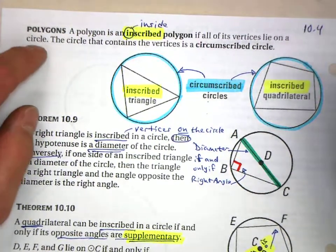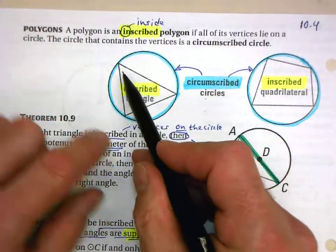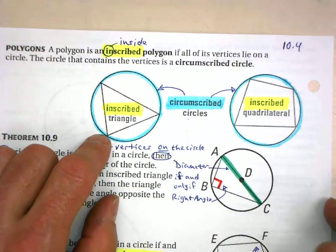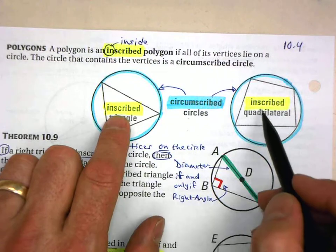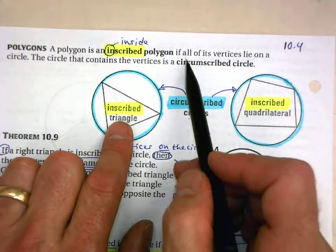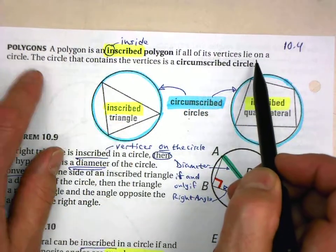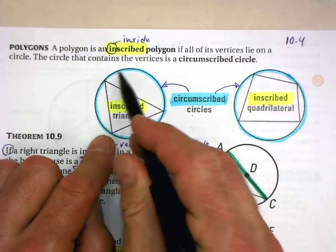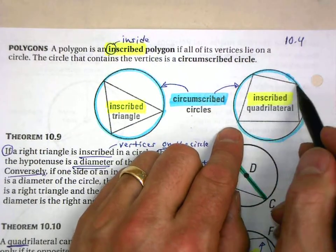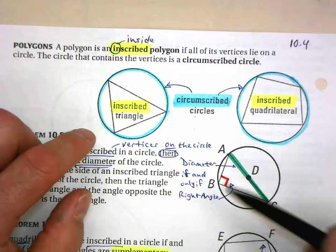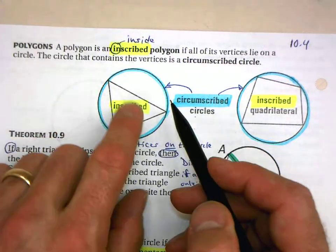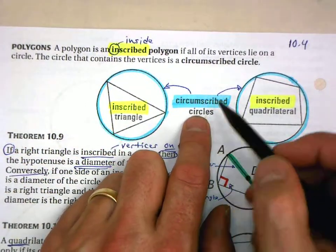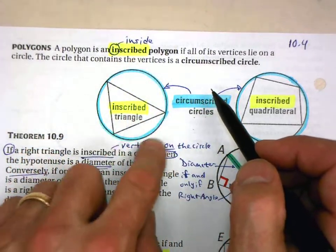Let's look at inscribed polygons. Here's a triangle and here's a quadrilateral. These are special kinds of polygons because they are inscribed polygons — meaning all of their vertices lie on the circle. Each vertex of this triangle is on the circle, and same for the quadrilateral. This is an inscribed triangle, inscribed within this circle. And this circle circumscribes this triangle.